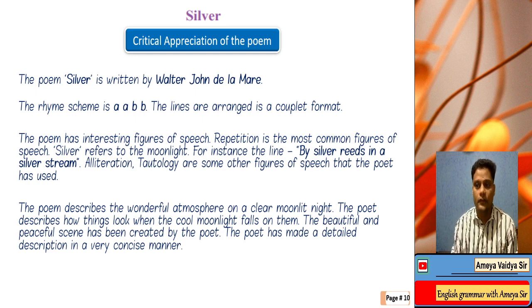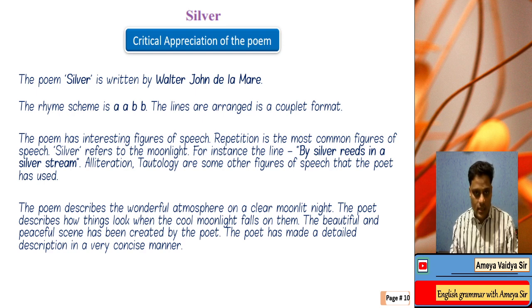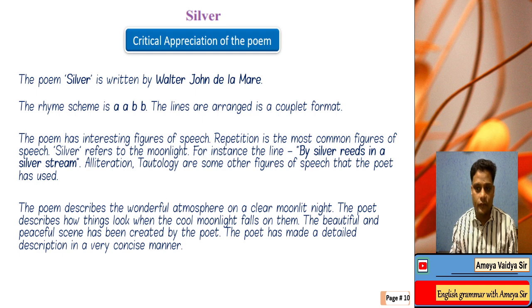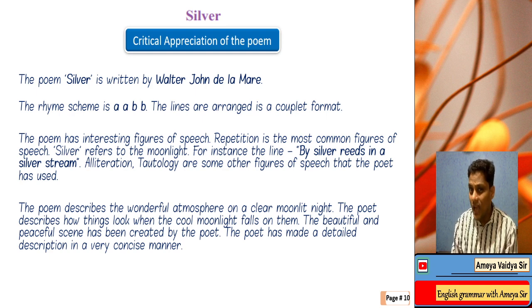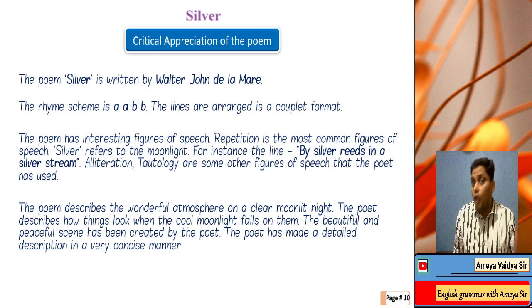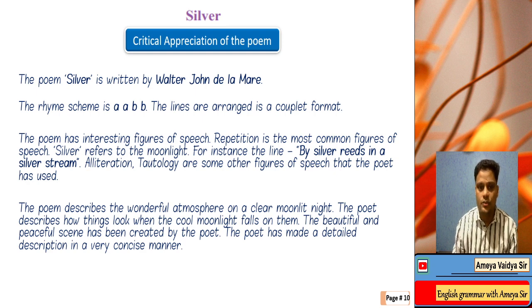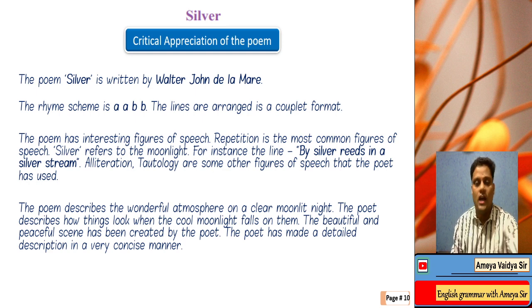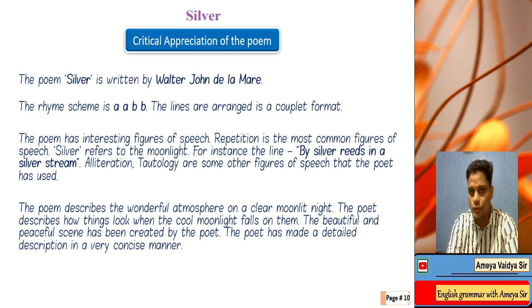The poem has interesting figures of speech. Repetition is the most common — silver refers to the moonlight, for instance 'by silver reeds in a silver stream.' Alliteration and tautology (T-A-U-T-O-L-O-G-Y) are other figures of speech the poet has used. The poem describes the wonderful atmosphere on a clear moonlit night (moonlit is spelled M-O-O-N-L-I-T, not moonlight). The poet describes how things look when cool moonlight falls on them, creating a beautiful and peaceful scene through imagery, making a detailed description in a very concise manner.